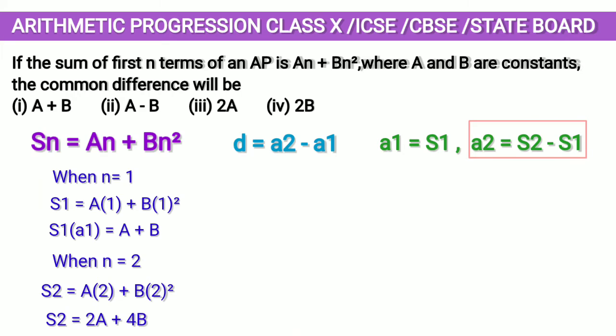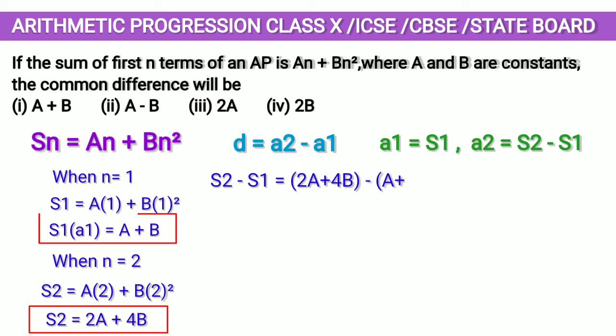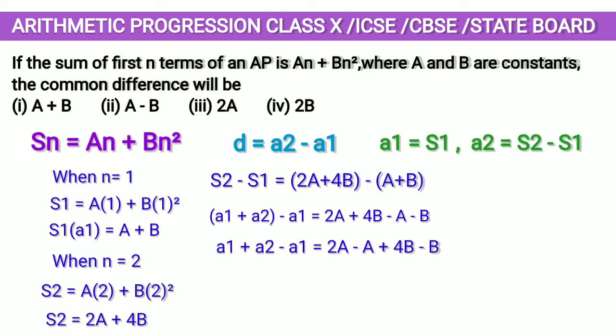s2 - s1 = (2a + 4b) - (a + b). s2 is sum of first two terms, that is a1 + a2, and s1 is a1. So we have a1 + a2 - a1 = 2a + 4b - a - b. On opening the bracket, a1 is getting cancelled. We have a2 = a + 3b.